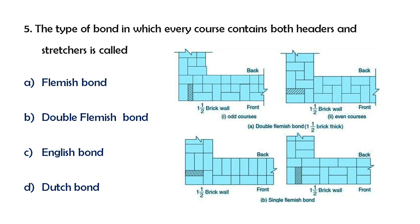The type of bond in which every course contains both headers and stretchers. A header is a brick laid widthwise, and a stretcher is a brick laid lengthwise. The options are Flemish, Double Flemish, English, and Dutch bond. The answer to this PSC question is Double Flemish bond.